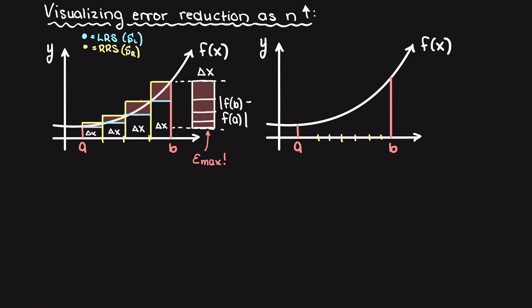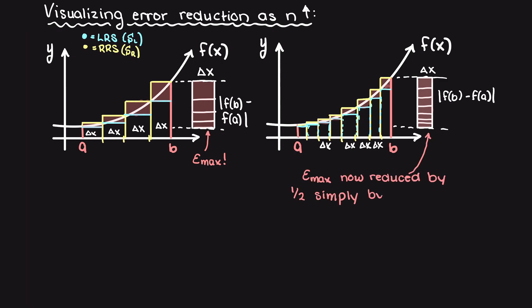Then, repeating this process for our higher subinterval group, our height of the rectangle does not change. However, our width is now half of what it previously was, thereby reducing our error by half.